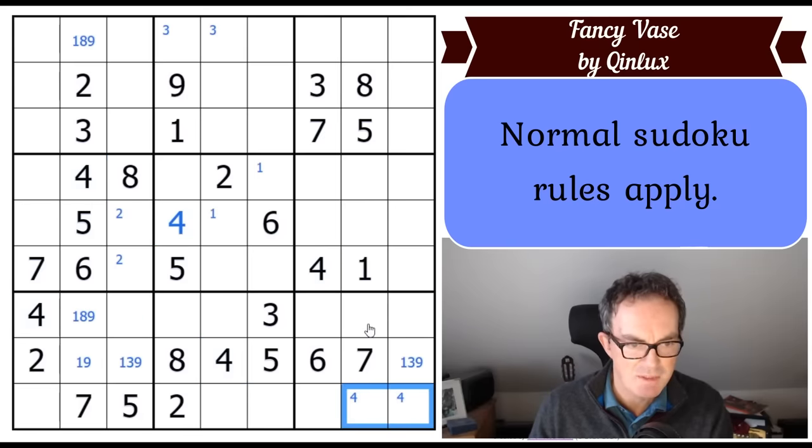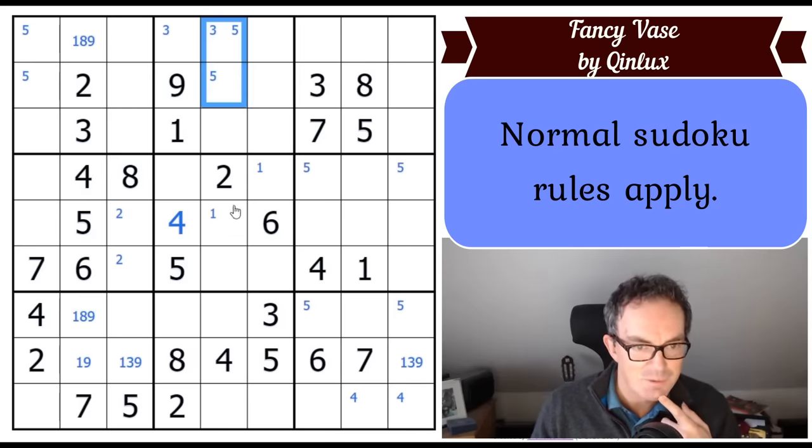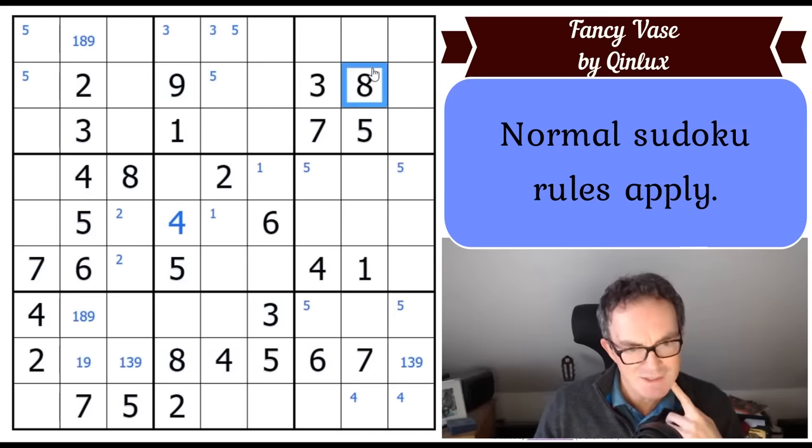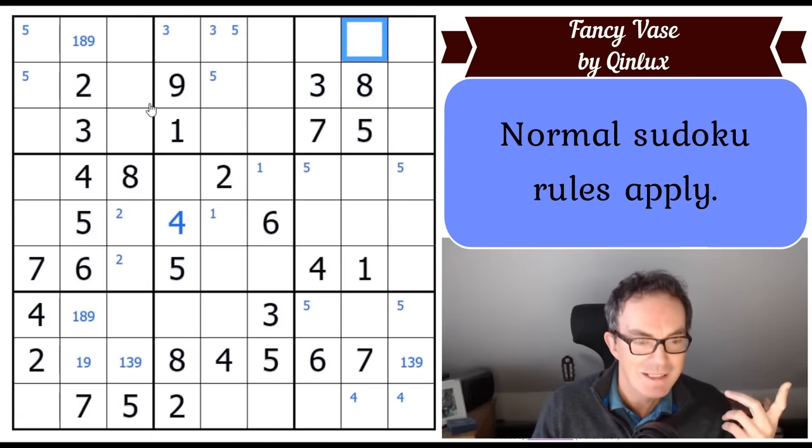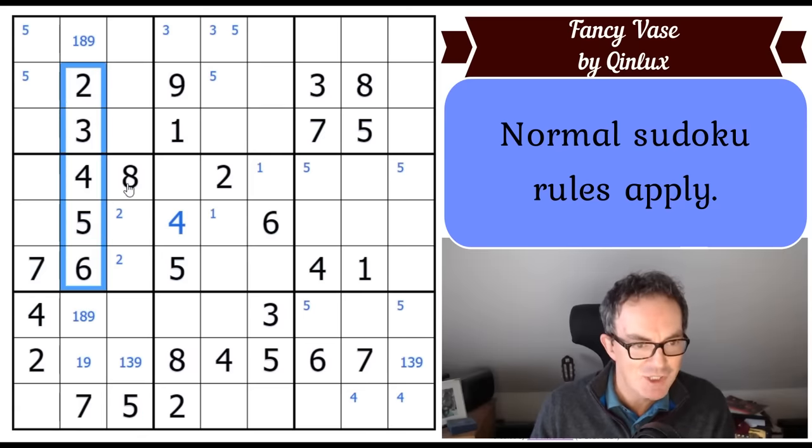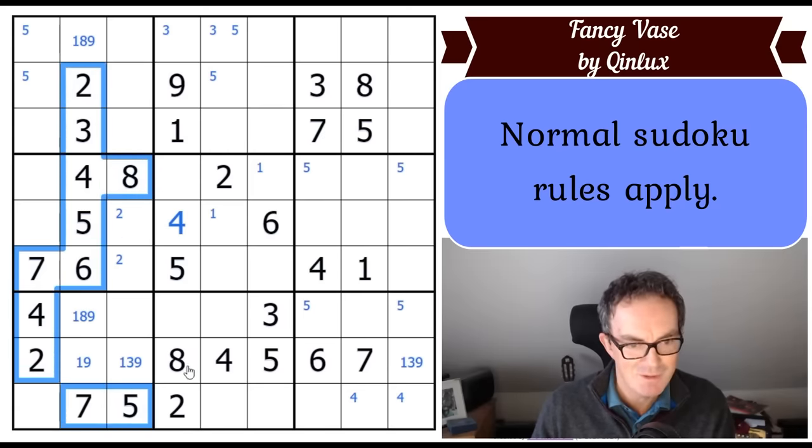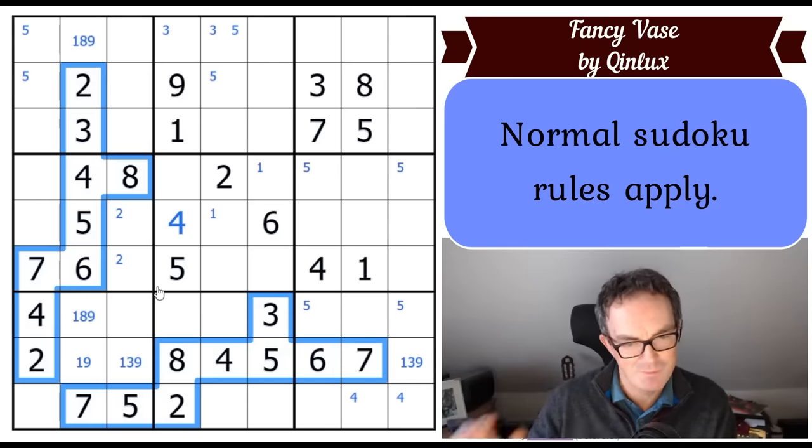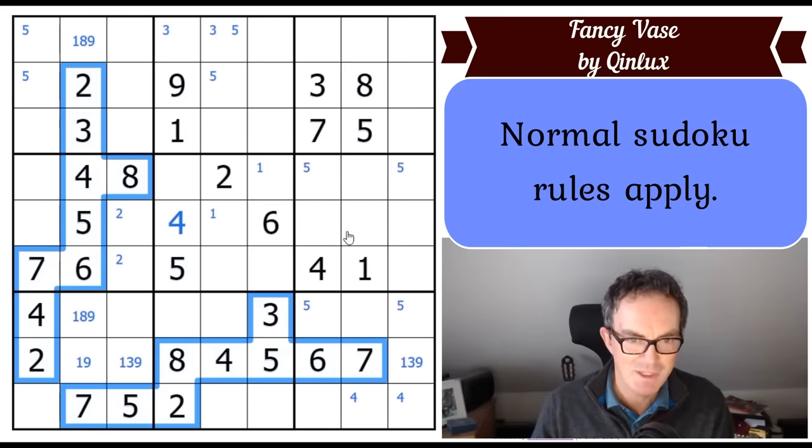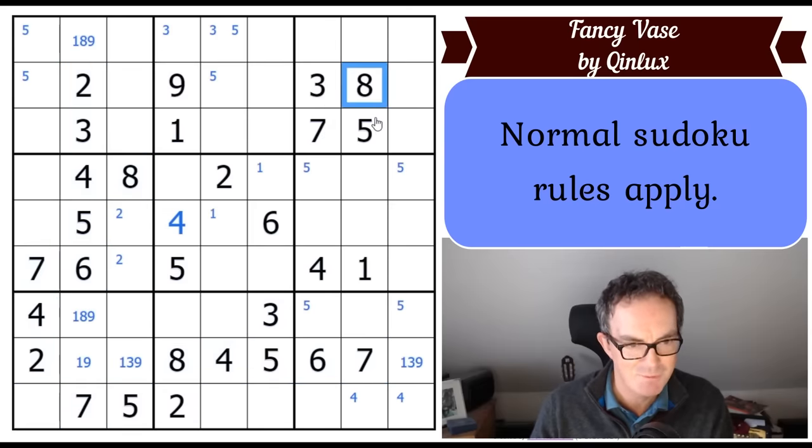One in box five is in one of two places. Two in box four is in one of two places. Threes, one of two places in box two. Let's carry on looking at fours. I can lock it into two places in box nine. Fives, I can lock into one of those two cells. So fives sort of radiate out of the bottom left portion. It does sort of look like a vase.